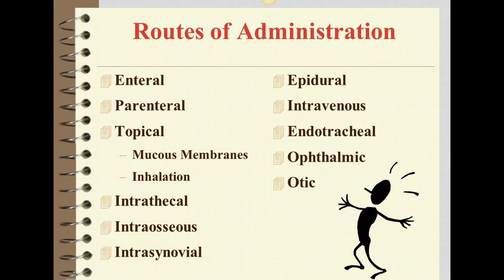Now we're going to look at routes of administration. Enteral is through the GI tract and includes the mouth, tube feeding, and rectal. Parenteral avoids the gut — that would be injectable drugs, and asepsis is very important. Topical is applied to the surface of the body and can be local or systemic; an example of local would be something for itching, and systemic would be a nitro patch. Mucous membranes — an example would be buccal administration. Inhalation uses aerosol spray, mist, or powder to penetrate the lungs. Intrathecal medication is placed into the fluid surrounding the spinal cord. Intraosseous is a medication injected into the bone marrow. Intrasynovial goes into the synovial cavity of the joints.